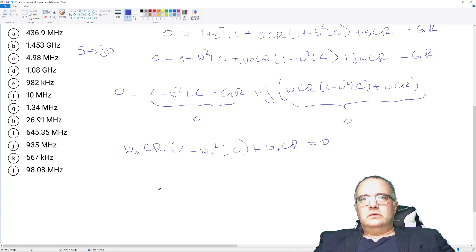Can cancel this one. So plus one, two equal to ω₀ squared is equal to two divided by LC. Or omega is square root of two divided by square root of LC.